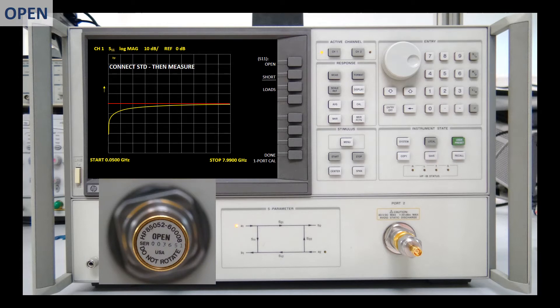I will connect now the open. We call it open, but it is not a true open. It is very difficult to build an open circuit at high frequencies due to radiation losses. This standard is just a short transmission line terminated with a capacitor. Now I press Open and the instrument starts the second measurement. And the label Open becomes underlined.